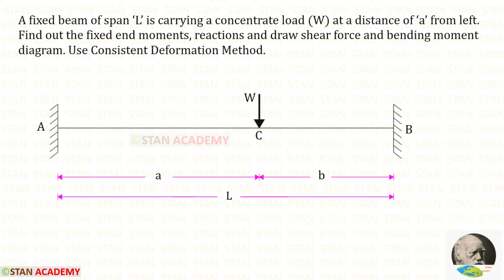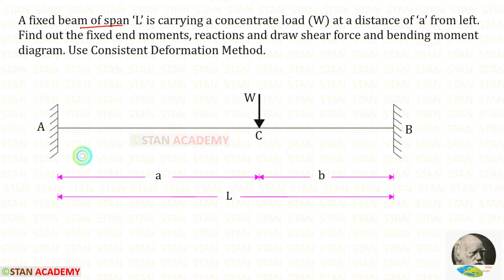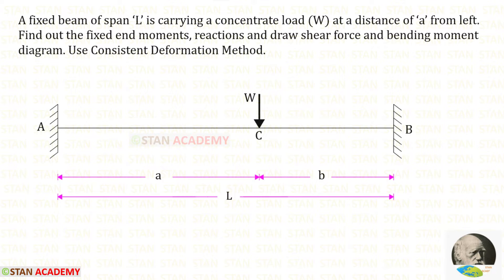Hello everyone. Today we are going to analyze a fixed beam using the consistent deformation method. In this fixed beam we have an eccentric point load W acting at a distance of A from the left support. The span of the beam is given as L. In this analysis we are going to find the fixed end moments, reactions, and then draw the shear force and bending moment diagrams.